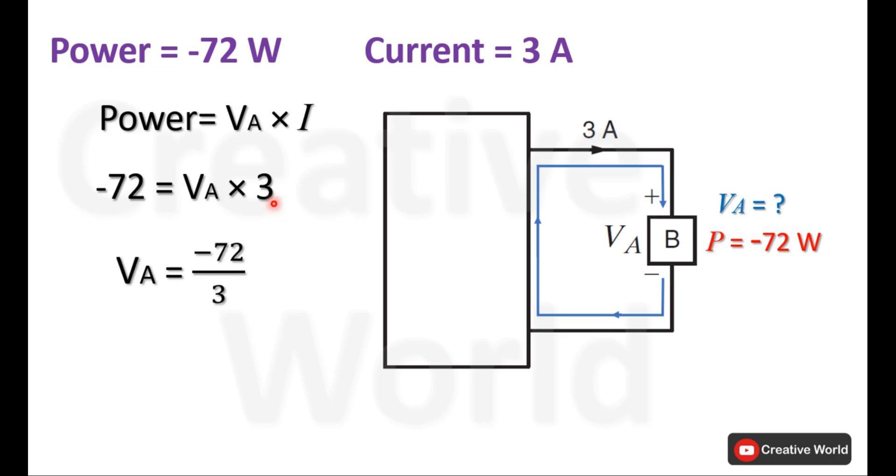We got VA = -72 divided by 3, and the final answer for VA is -24 volts.